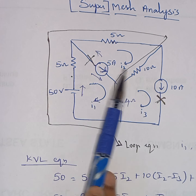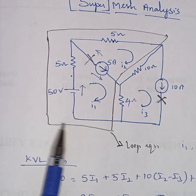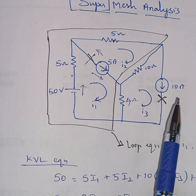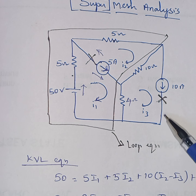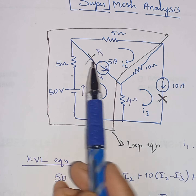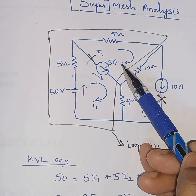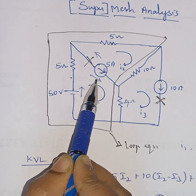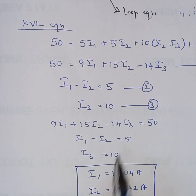To summarize: when a current source is present, we form a super mesh with only one loop equation, then write the current source constraint equations — such as I1 − I2 = 5 — to complete the system and solve for all mesh currents.